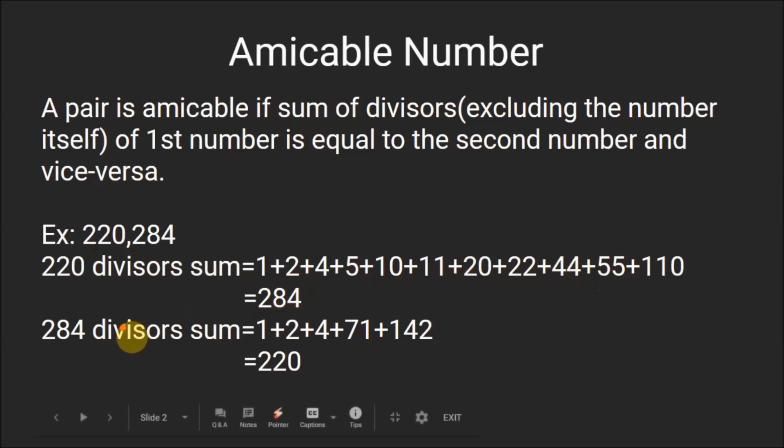And the divisors of 284 will be 1, 2, 4, 71, and 142 and the sum will come out to be 220. So as this sum comes out to be 284 and this sum comes out to be 220, these two numbers form an amicable pair.